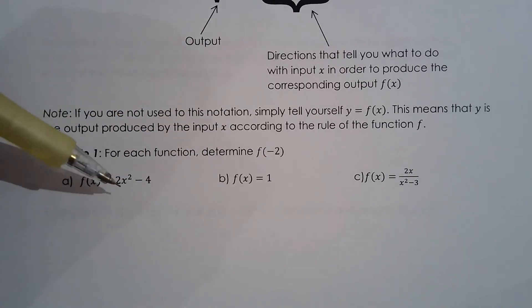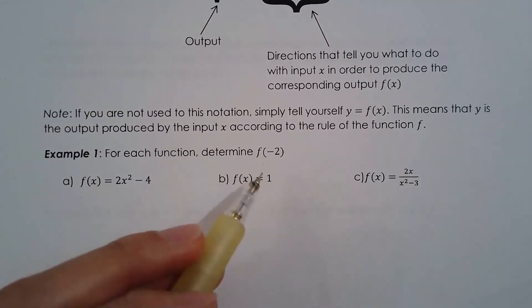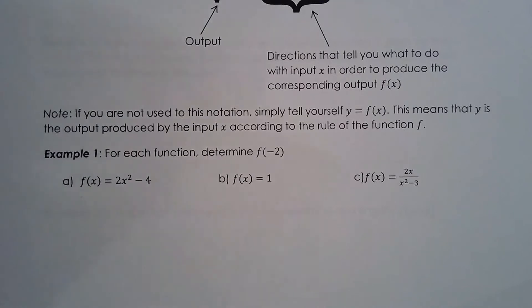No problem. I know exactly what to do. I can find the output when the input is negative 2 because I have the directions. I know exactly what to do to the input. I'm going to square it and then multiply it by 2 and take that product and subtract it by 4. So f of negative 2 is basically saying what is the output when the input of the function is negative 2. In grade 9 or 10 you would say let x equals negative 2 and solve for y.